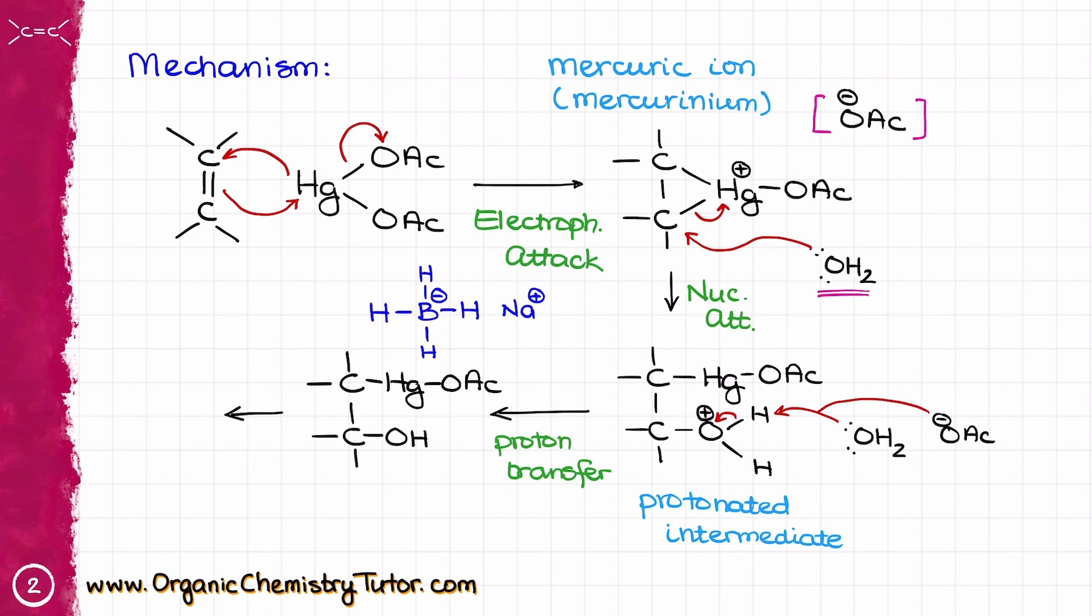This step is also sometimes referred to as demercuration reaction so this reaction can be called either oxymercuration reduction or some instructors refer to that as oxymercuration demercuration reaction which for our purposes is exactly the same thing. Typically most instructors will not ask you to draw the mechanism for that last step but if your instructor does usually we give students the simplified version of that mechanism where the hydride ion from the borohydride drops onto a carbon which causes a cascade of the electron density like this and as a result you're going to end up with an alcohol.